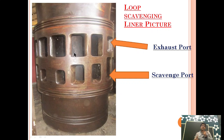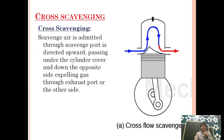To overcome this problem, a modification in design was done for cross scavenging. In cross scavenging, the scavenge port is placed on one side of the liner and the exhaust port is placed on the other side of the liner. This prevents the problem of large temperature gradient difference and also prevents exhaust back pressure and air blowdown.